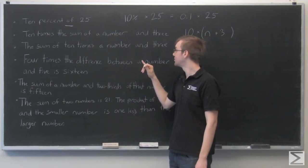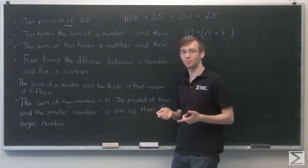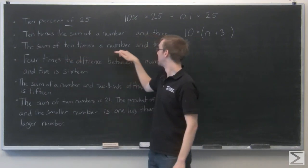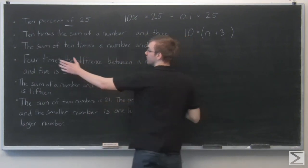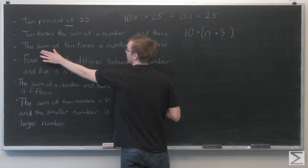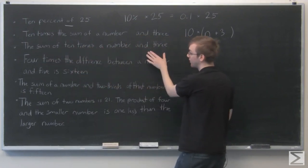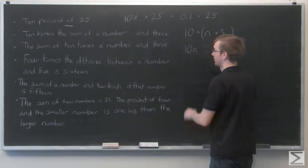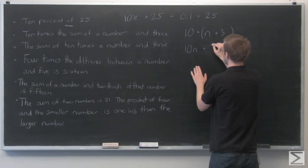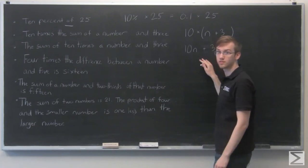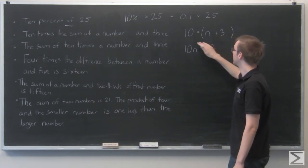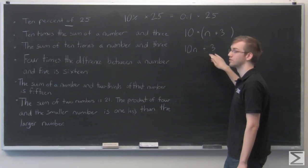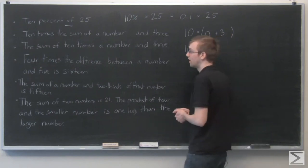Now compare this one to the next problem: the sum of 10 times the number and three. Here it's the same operations, the same numbers, but the order switched around. We have the sum of 10 times the number and three. Because the sum comes first, it's this quantity and this quantity being added together. So we have 10 times the number plus three. Here there are no parentheses. As you can see, these are different equations. Here the 10 would be distributed to the n and to the three, whereas here it's just 10n plus three.